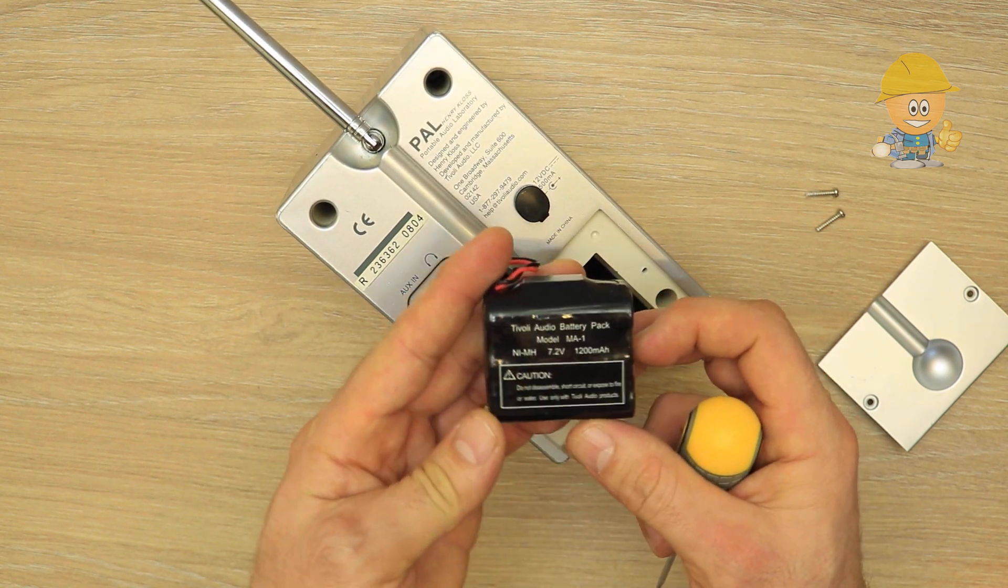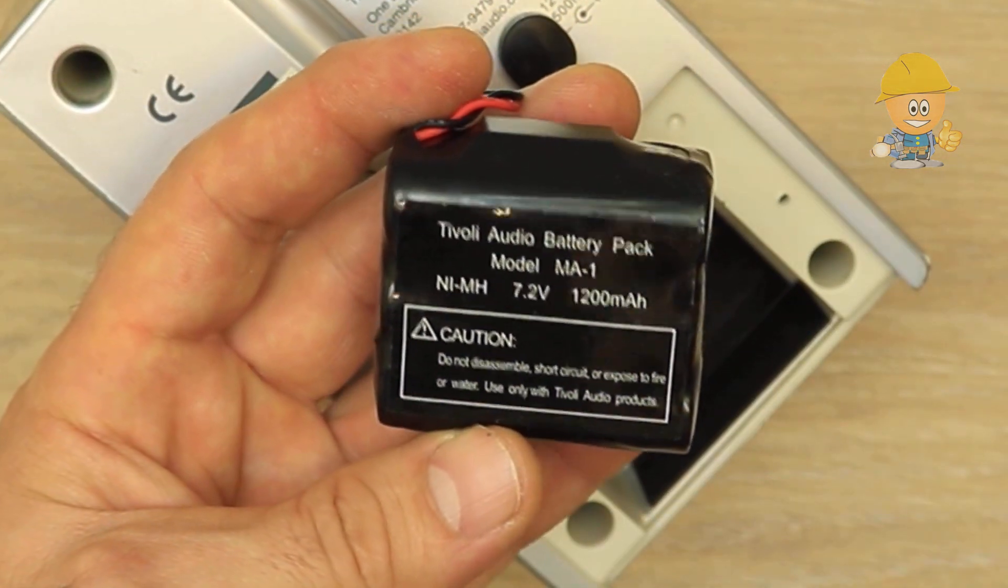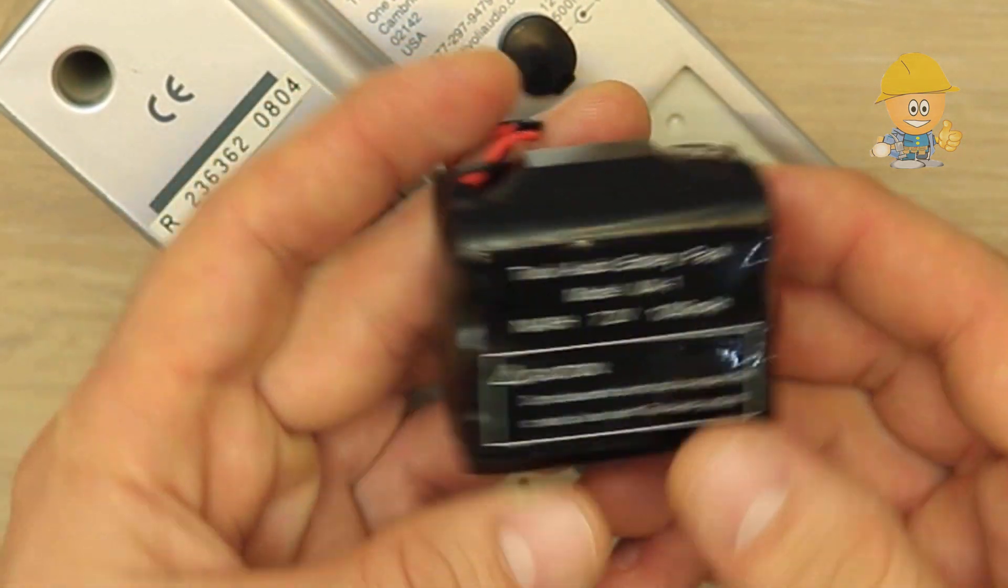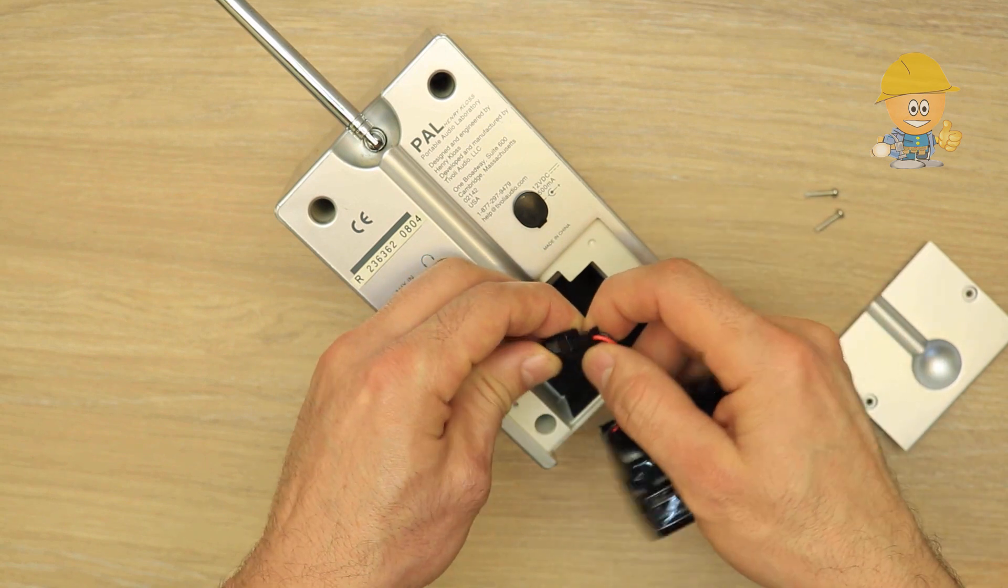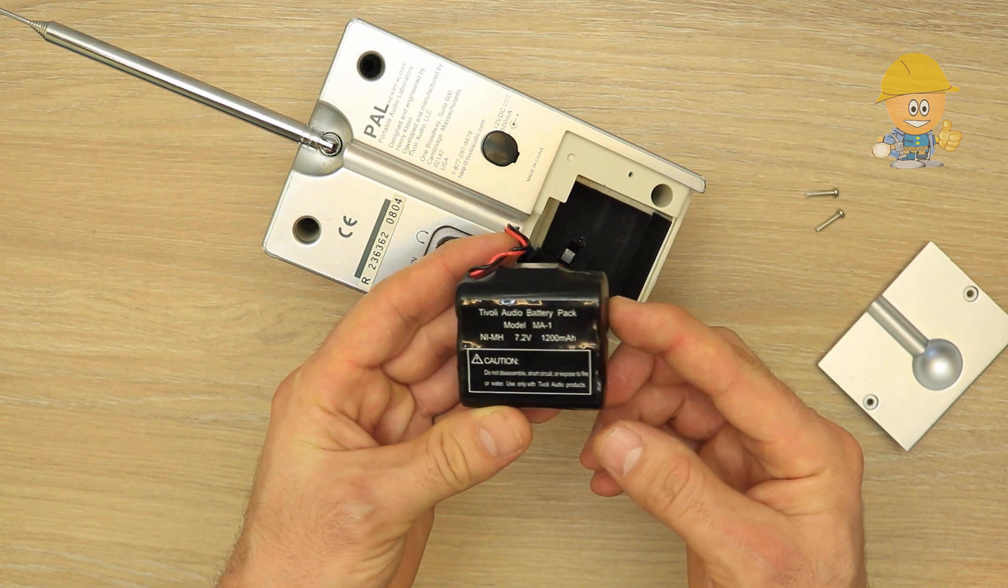Here I have a nickel metal hydride battery of 7.2 volts and 1.2 ampere hours. A nickel metal hydride battery can have two to three times the capacity of an equivalent size nickel cadmium, and its energy density can approach that of a lithium-ion battery.